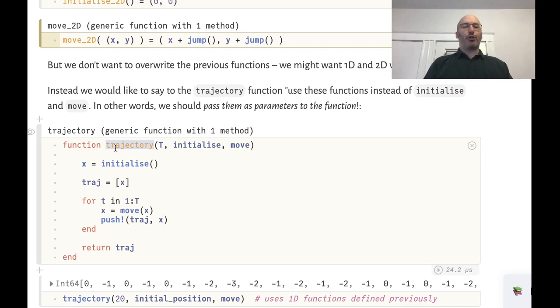And so the way we do that is to pass in the functions as arguments to the trajectory function. So here is the new version of the trajectory function and we're passing in initialize and move as parameters to this function. So now when I call initialize as a function it will actually call whichever function I pass in as an argument to trajectory.